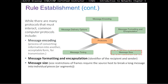Then we have message size — size restrictions on frames. They require the source host to break long messages into individual pieces, which we call segments. If you have a big message to send from source to receiver, this message cannot go as-is, so we have to break it into small pieces. Layer 4, the Transport layer, does that, and those pieces are called segments.